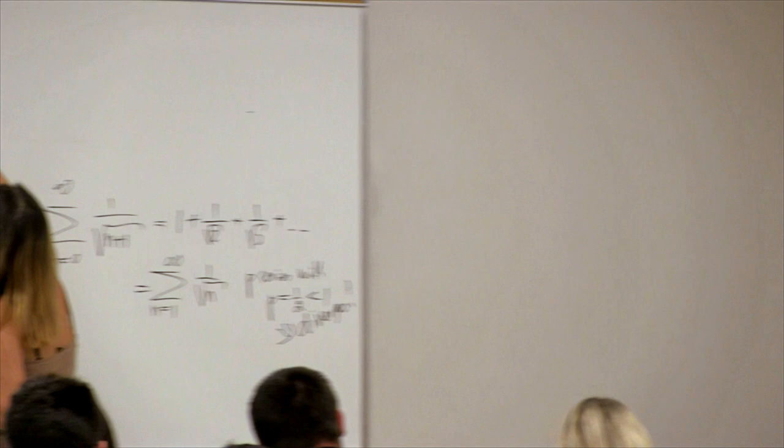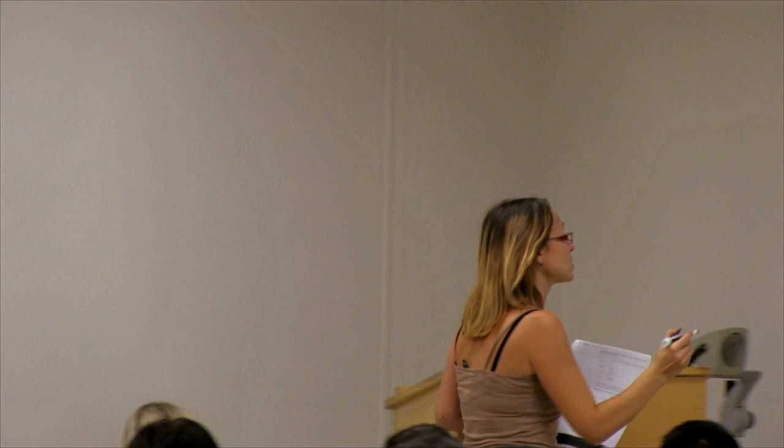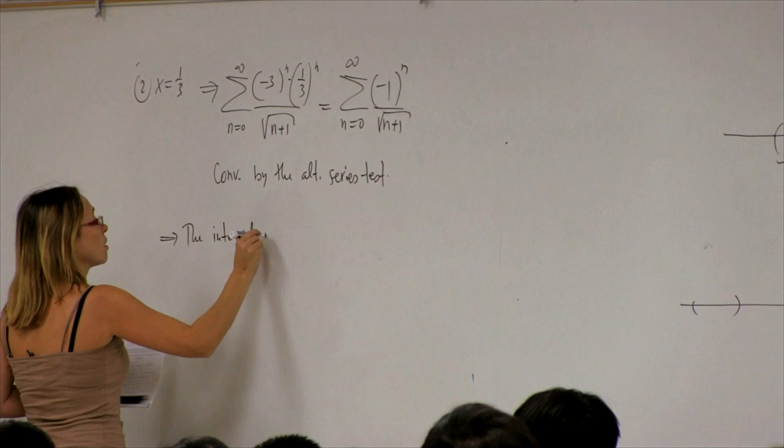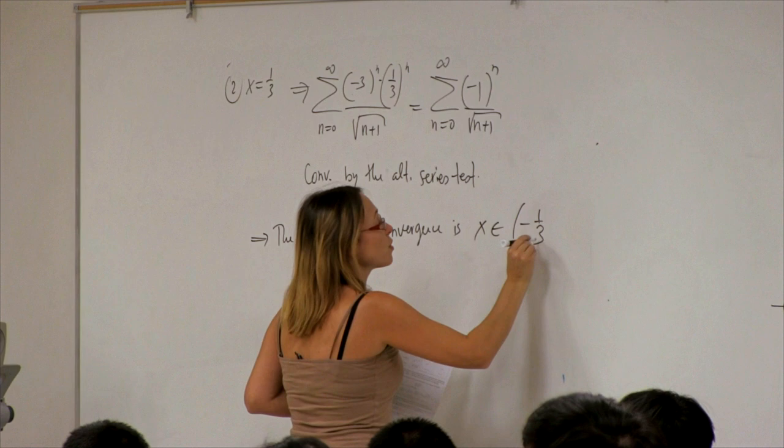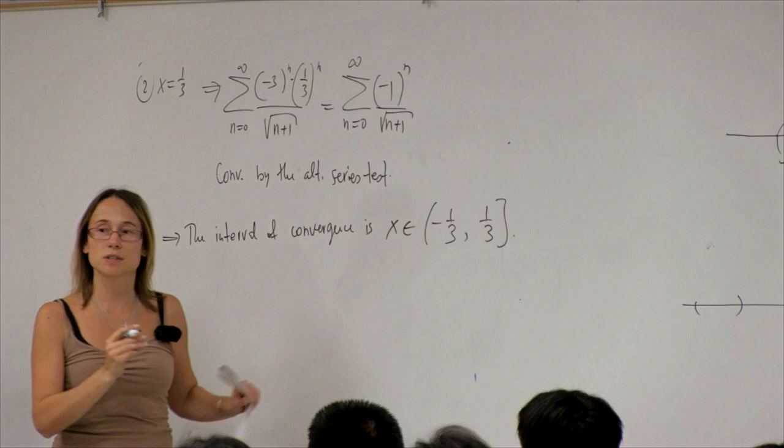So I can write down the answer to the second question: the interval of convergence is from −1/3 (not included) to 1/3 (inclusive). This is an asymmetric interval of convergence.